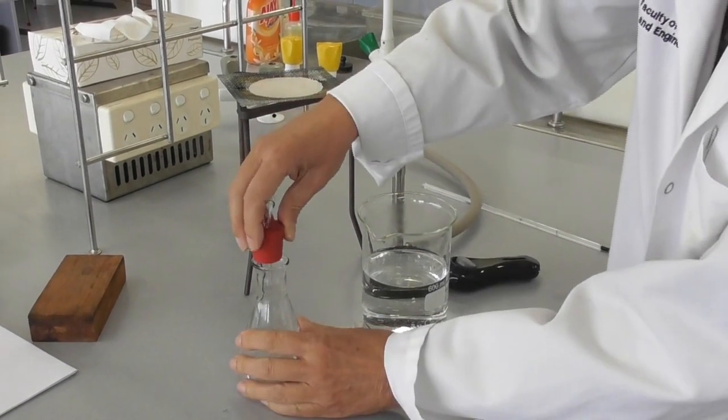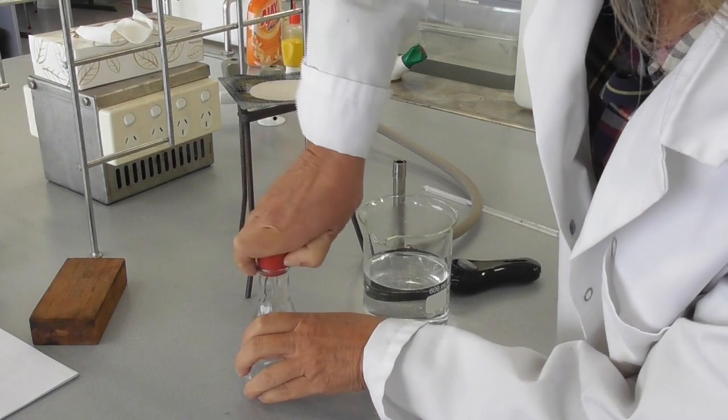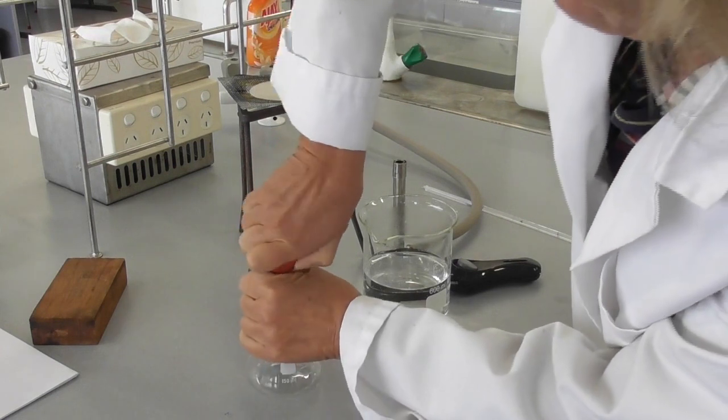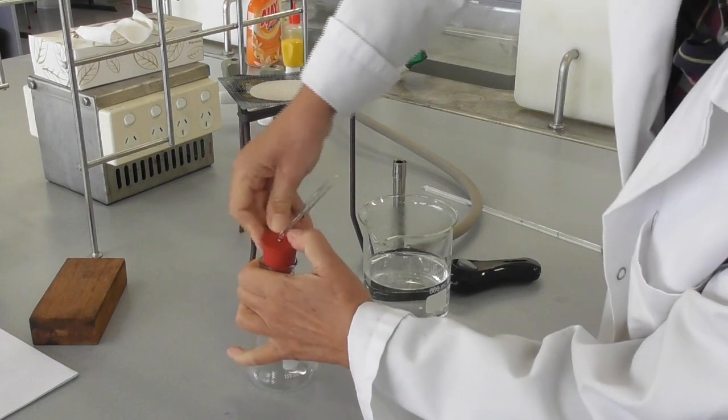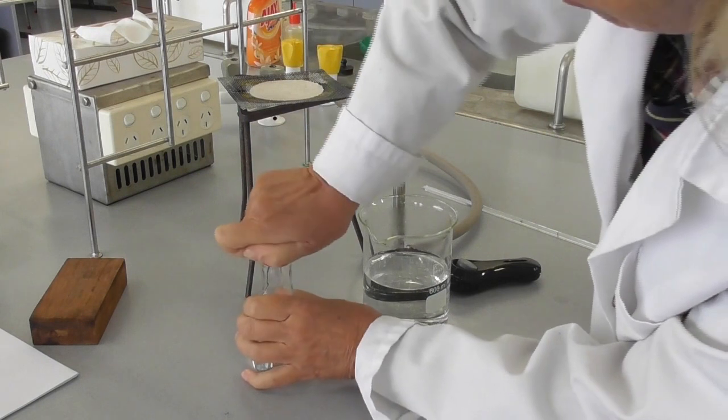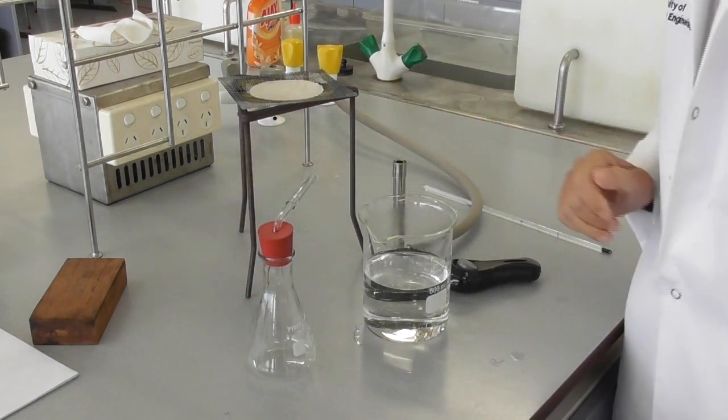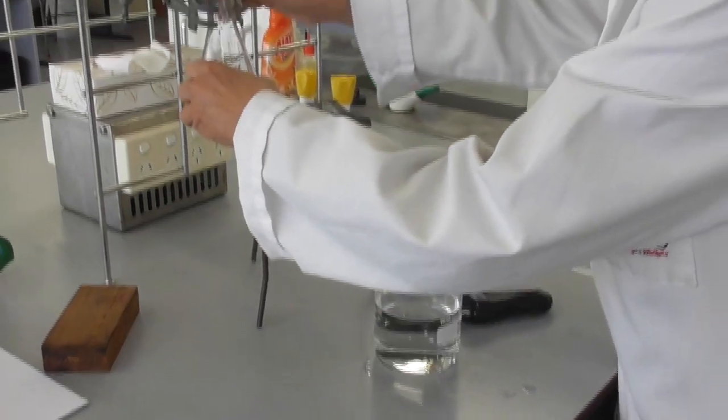We assemble the apparatus by putting a bung that has a hole in it into the neck of a 150 ml Erlenmeyer flask. The bung needs to sit tight and snug in the neck of the flask so it doesn't fall out later and there is no air flow possible.